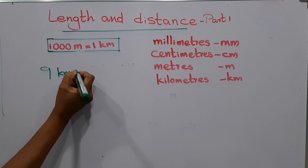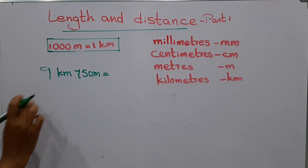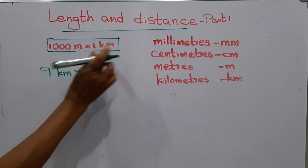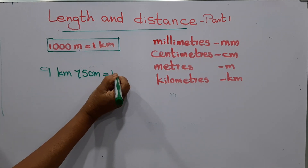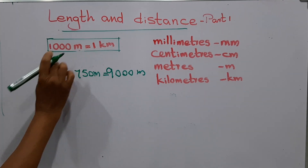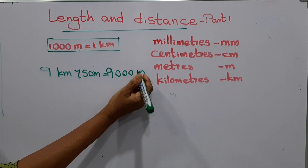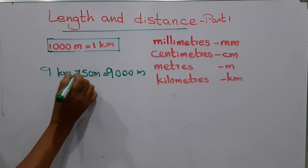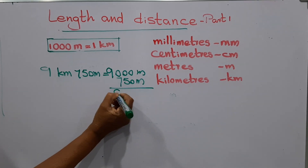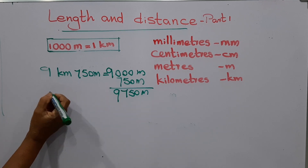Nine kilometers seven hundred and fifty meters — asking in meters. One thousand meters equal one kilometer, so nine kilometers equal nine thousand meters, plus seven hundred and fifty meters. All together it comes to nine thousand seven hundred and fifty meters.